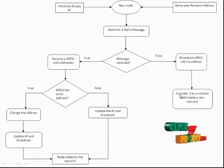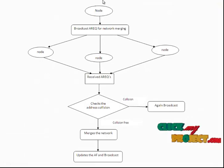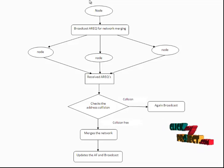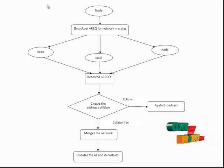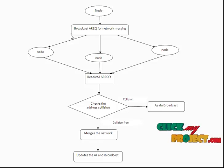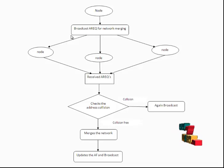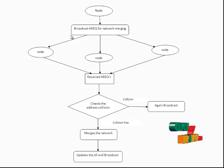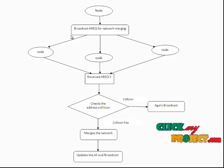The initiator node randomly creates a network and chooses a partition ID. The second process is partition merge: the node first broadcasts an address request for network merging, all nodes receive it, and it checks for address collision. If no collision occurred, it merges the network; otherwise, it broadcasts the message again and changes the address. Finally, the merged network updates the address filter and broadcasts the messages.